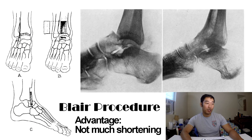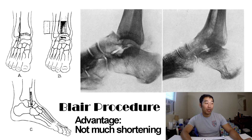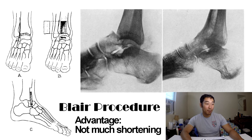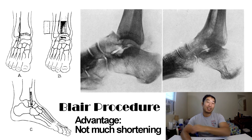The Blair procedure is also a fusion of the tibia and talus used when the talar body is injured. Blair developed this technique by making an anterolateral incision, harvesting a one-by-two inch graft from the tibia, sliding it down, making a hole in the talar neck, and inserting the graft into that slot — fusing without any internal fixation. As seen in the radiograph, bone callus forms nicely and contours to the shape of the foot. The foot should be positioned at about 100 to 105 degrees of equinus to avoid a rocker-bottom foot deformity post-operatively.